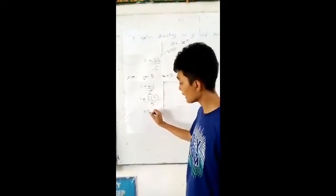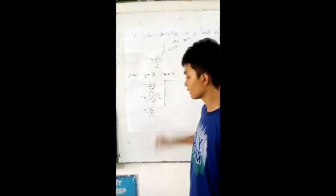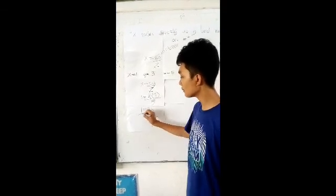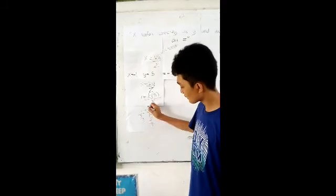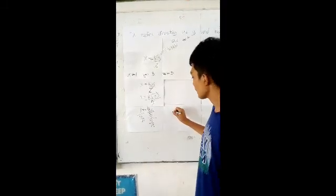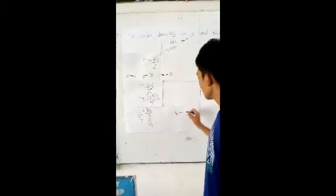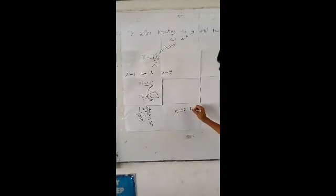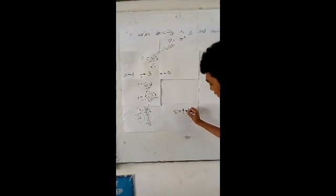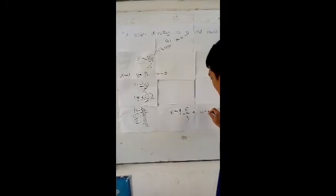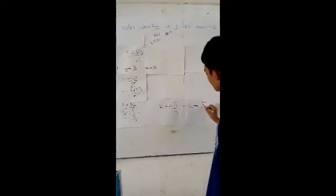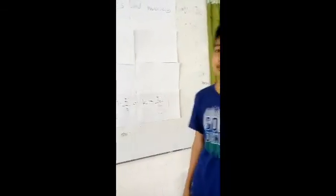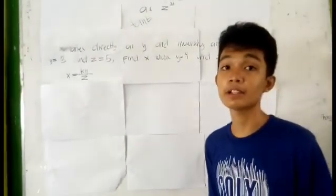So 1 equals 3K over 5. To isolate K, we divide both sides by 3 fifths, which means multiplying by its reciprocal, 5 thirds. So K equals 1 times 5 over 3, which gives us K equals 5 over 3.